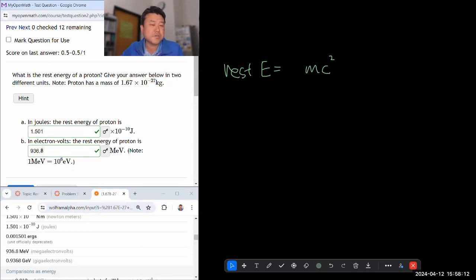So I found it's useful to have memorized that the rest energy of the proton is about 1000 MEV or about 1GEV. So number sense again.